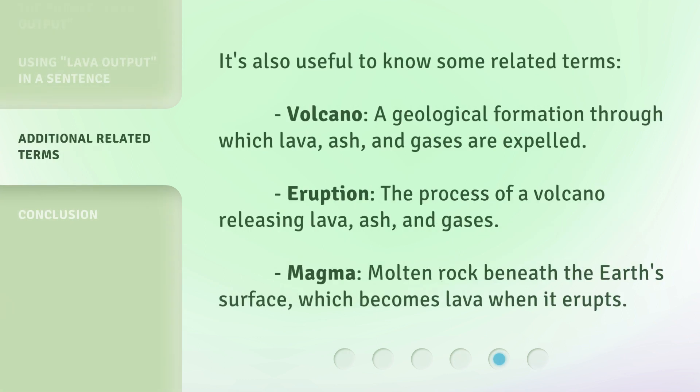It's also useful to know some related terms. Volcano: a geological formation through which lava, ash, and gases are expelled. Eruption: the process of a volcano releasing lava, ash, and gases. Magma: molten rock beneath the earth's surface, which becomes lava when it erupts.